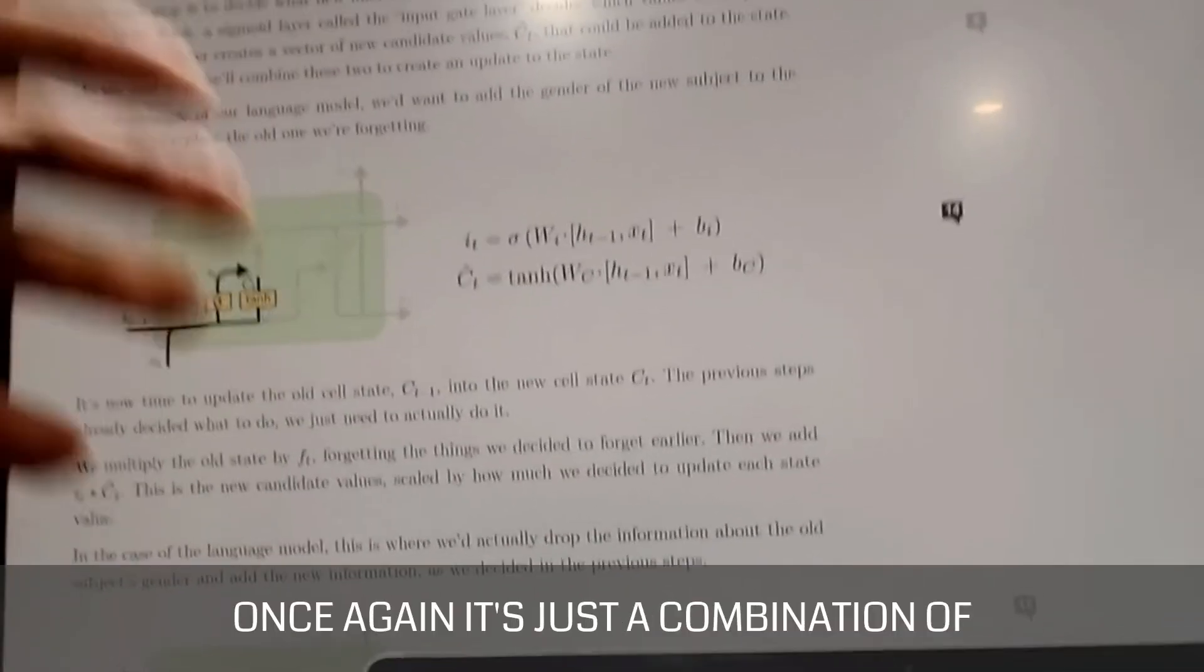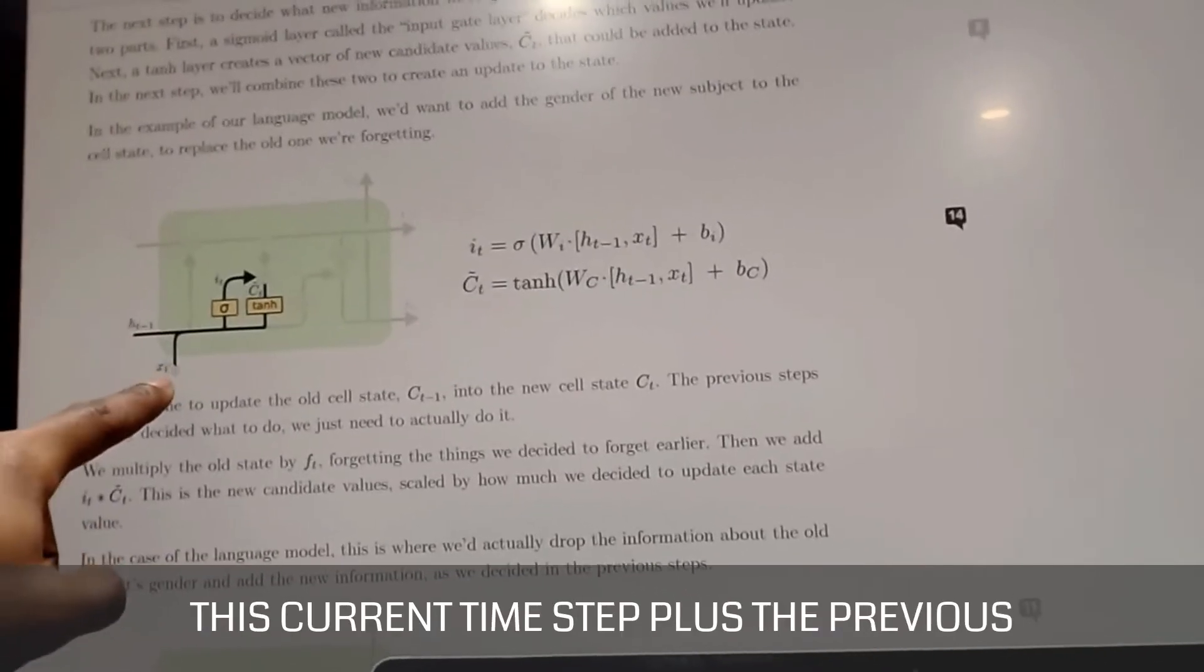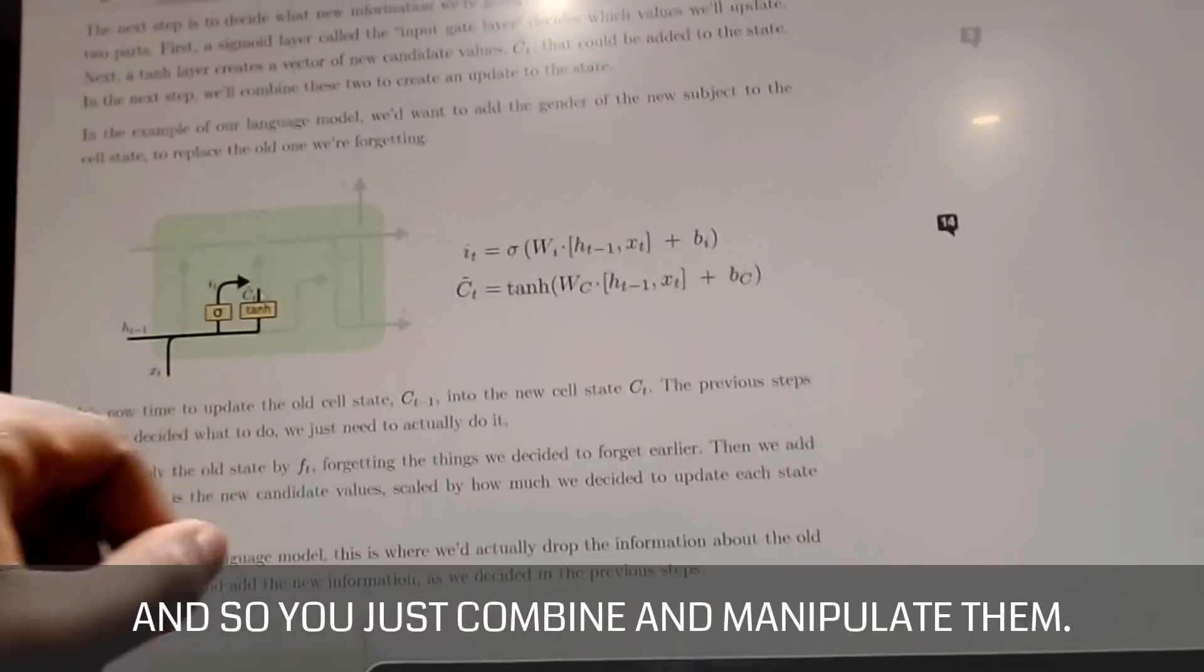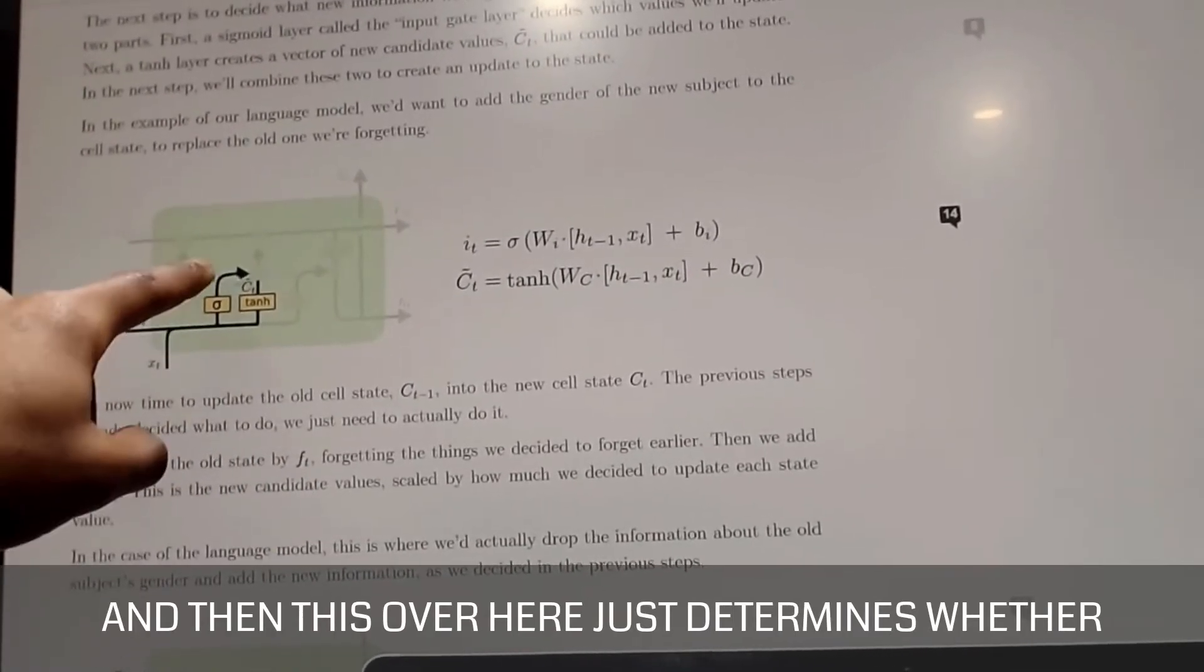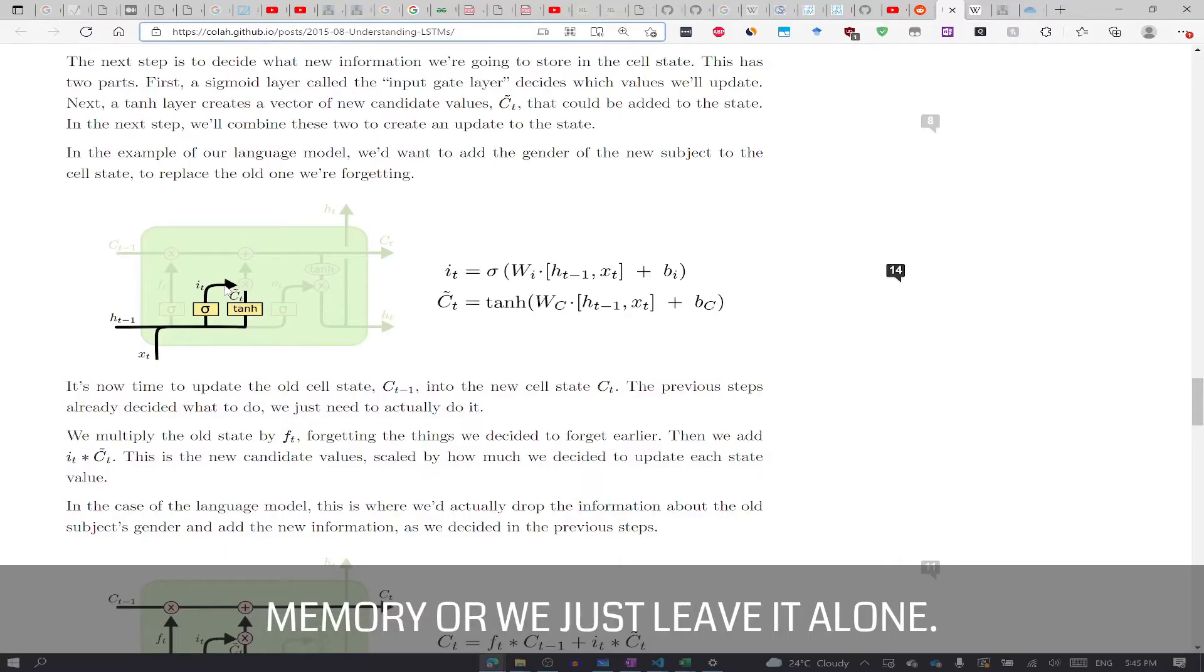Once again, it's just a combination of this current time step plus the previous time step. And so you just combine them and you just manipulate them. So that's what this is doing here. And then this over here just determines whether or not we keep it in memory or we just leave it alone and we discard it. So that's what that does.